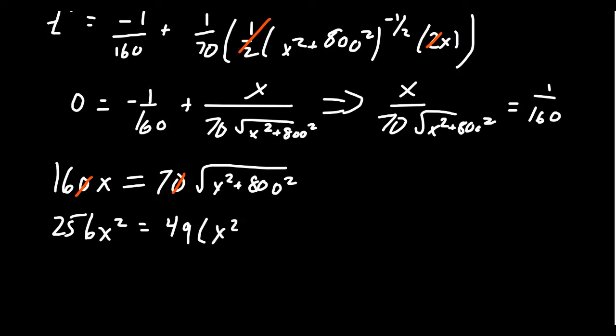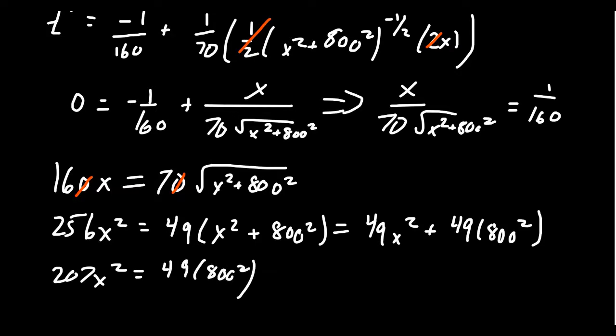Don't forget that 49x² plus 800². Distribute the 49. We get 49x² + 49 times 800². Aha, I'm still being lazy in my computation here. Subtract 49x² from both sides. You'll get 207x² = 49 times 800². And so divide both sides by 207. So you get x² = 49 times 800² over 207.